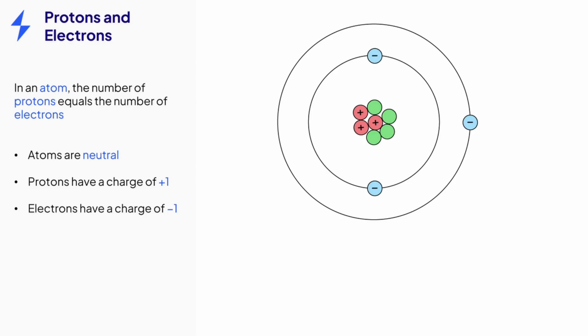When the number of electrons is not equal to the number of protons, we call that atom an ion.